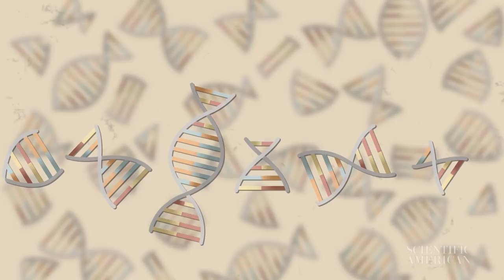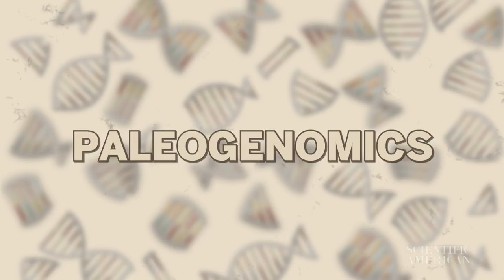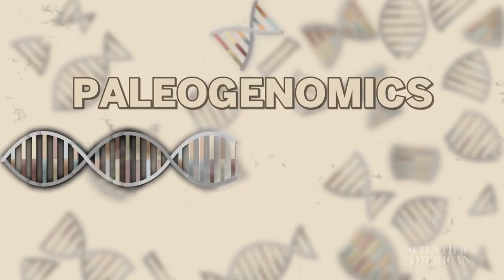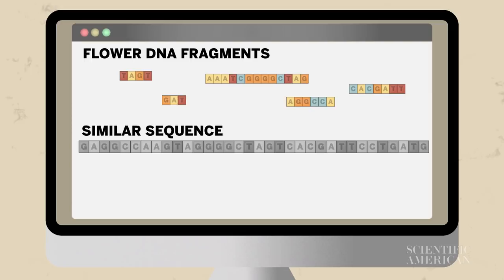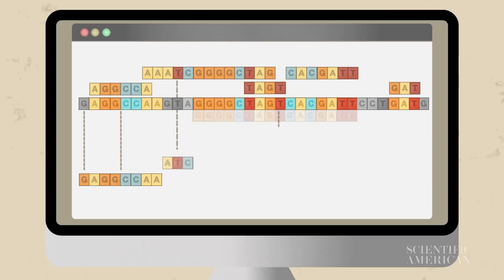So the scientists at Ginkgo turned to a paleogenomics lab for help. Like paleontologists assembling ancient bones, scientists working in paleogenomics piece together old fragments of DNA. Using similar DNA sequences as clues, the scientists were able to digitally assemble the genetic code for enzymes that make the extinct flower's fragrance molecules.